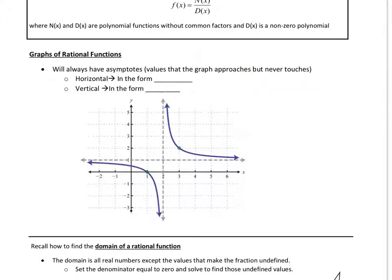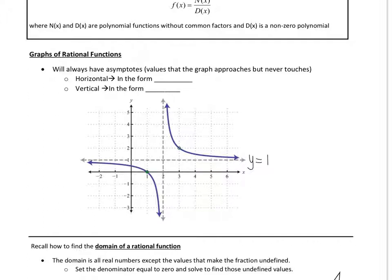Let's just look at this picture of a rational function, and look at these dotted lines here in gray. Do you see how this graph here is approaching the y value of 1, but it's never going to touch it? That value, y equals 1, is an asymptote. It's actually a horizontal asymptote, because it's going left to right.